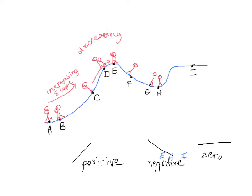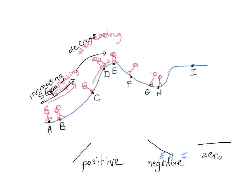From A to C it gets harder and harder for the little red man to climb up the hill, so from A to C our slope is increasing. However, from C to E he's having an easier and easier time until it flattens out, so from C to E the slope actually starts to decrease. Even though the function is increasing, the slope is decreasing because the little red guy is having an easier and easier time climbing up the hill.